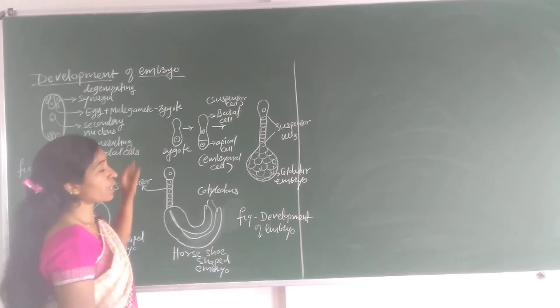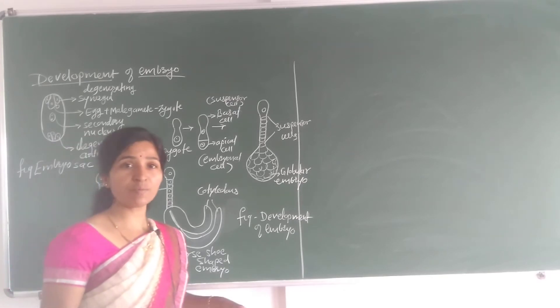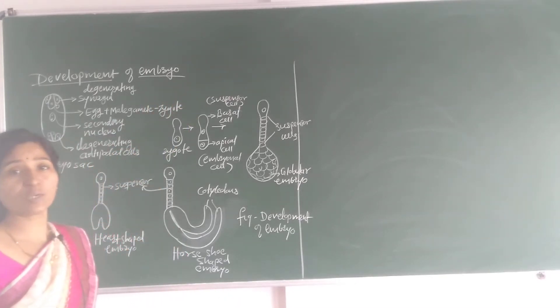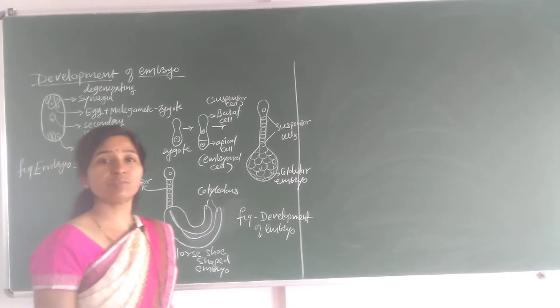Now this zygote undergoes some changes in their cell and forms embryo. That means a repeated mitotic division. Mitotic division, repeated mitotic division.